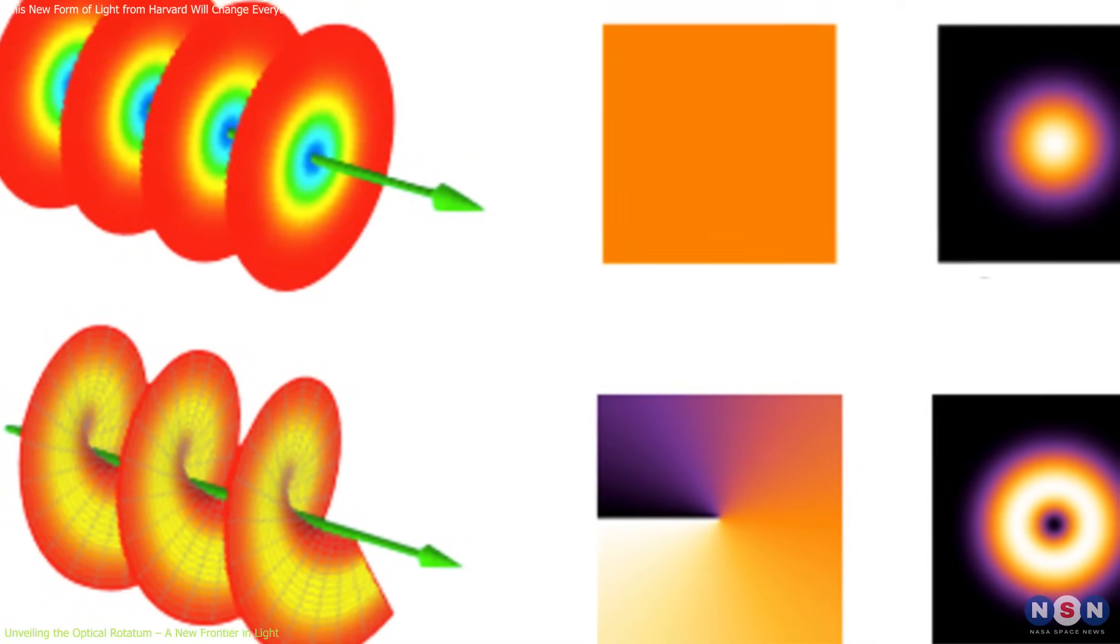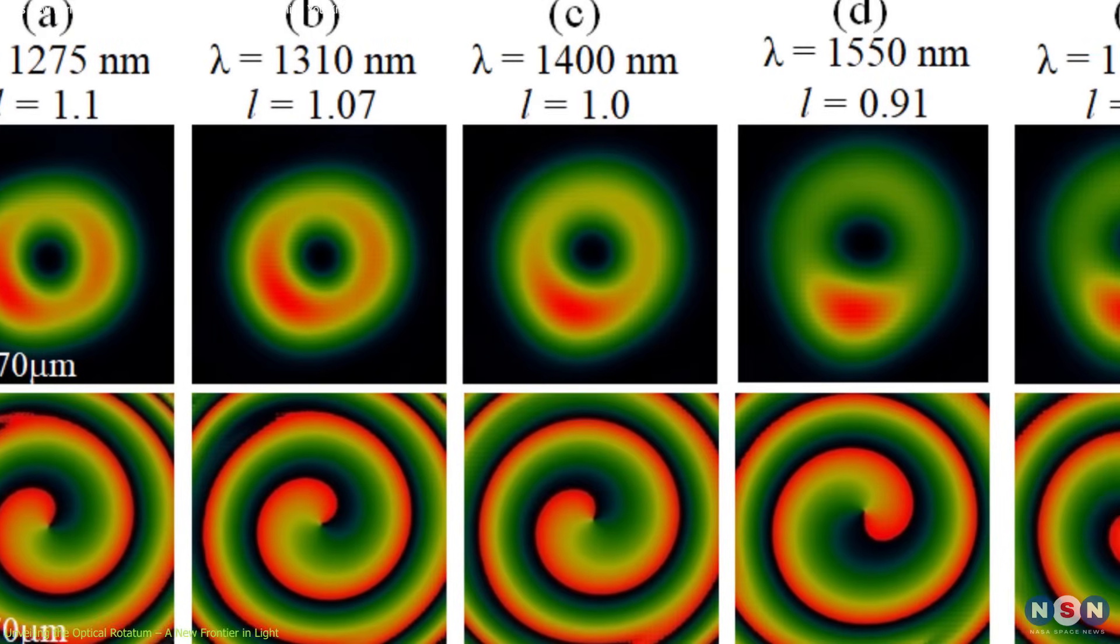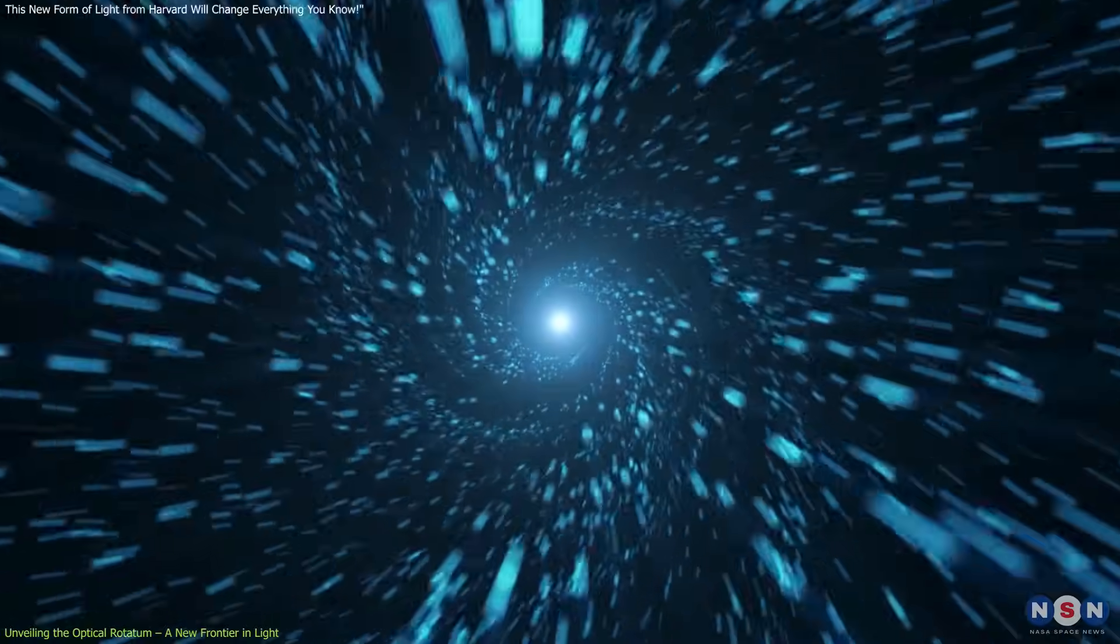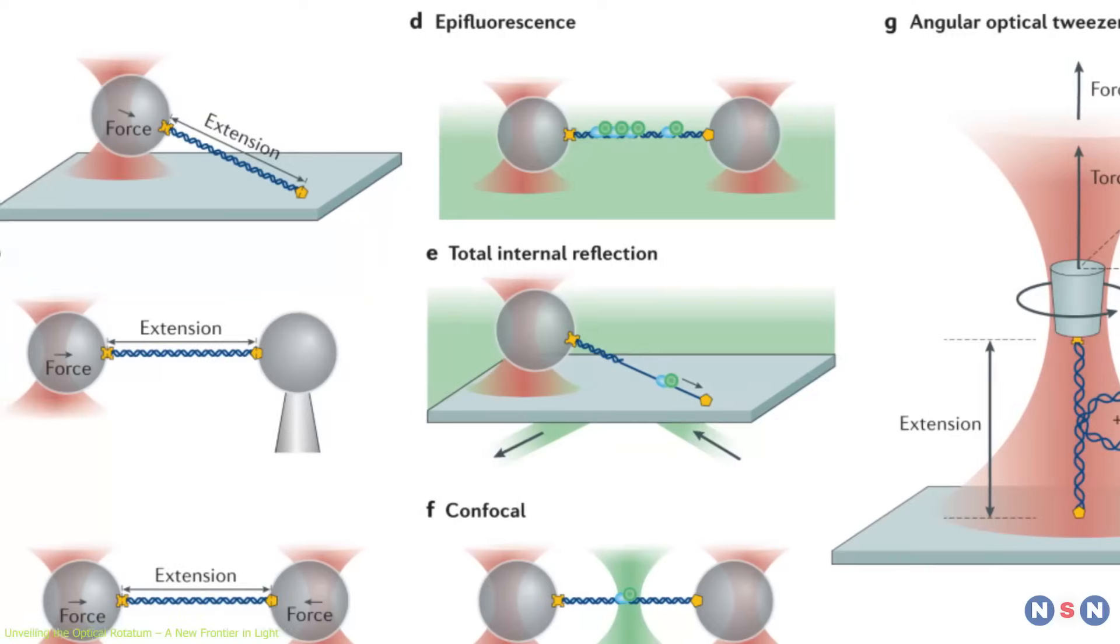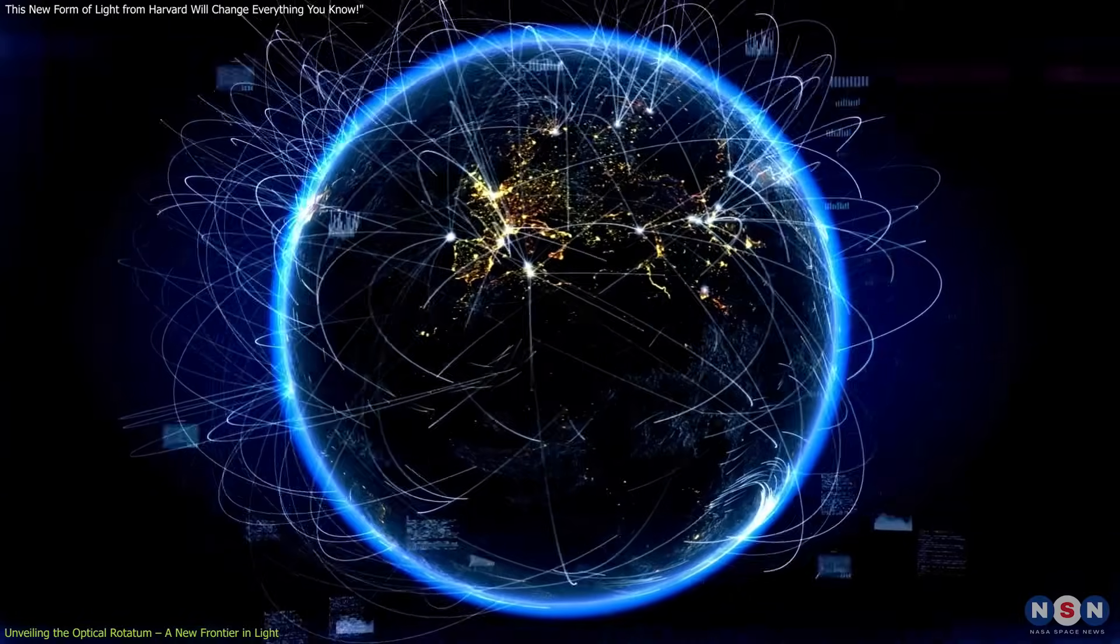Traditionally, light beams can be structured into optical vortices, which are beams that carry orbital angular momentum, OAM, causing them to twist as they propagate. These have been utilized in various applications, from optical tweezers to advanced communication systems.